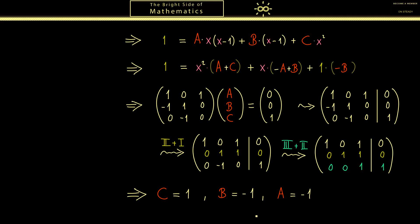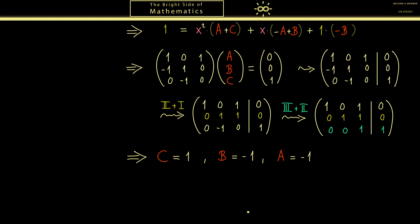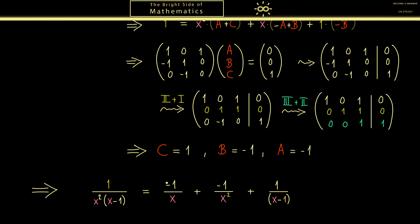So in summary our partial fraction decomposition is finished. Hence indeed our rational function here can be written in this form. And of course as we did at the beginning of the video you can check that this really works out. Just put the fractions back together and look if this comes out.